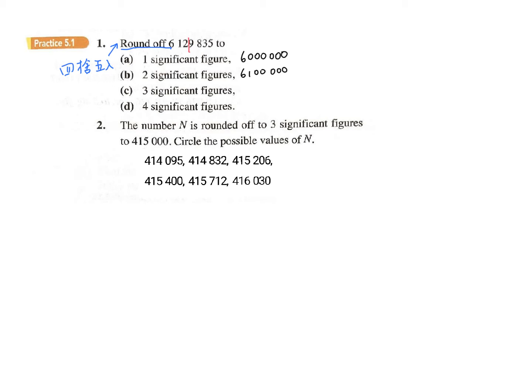So part c gives 613,000, and the final one, part d, correct to four significant figures, would be here. So 6,129 — if we add 1, it is 6,130. And you will find that correct to three significance figures and four significance figures is the same.